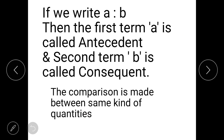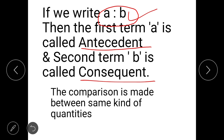If we write A ratio B, these are the two terms of the ratio. The first term A is called the antecedent, and the second term B is called the consequent. Also, the comparison is made between the same kind of quantities — we compare weight with weight, length with length, height with height, volume with volume, area with area, and perimeter with perimeter. We always compare two quantities of the same kind.